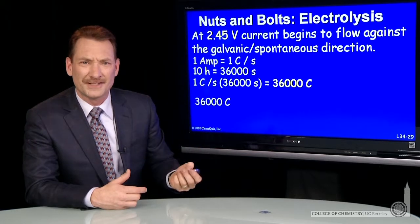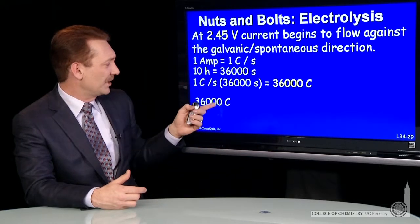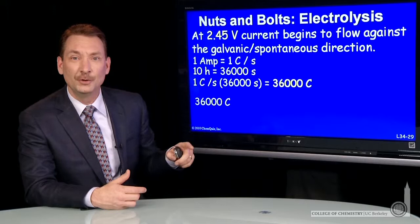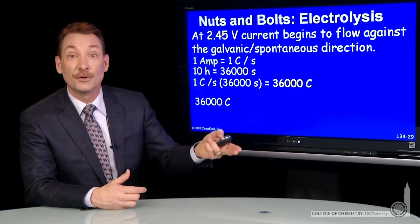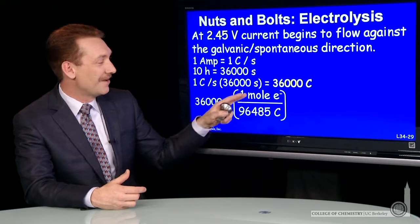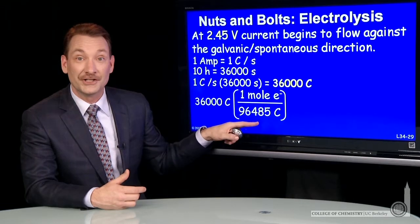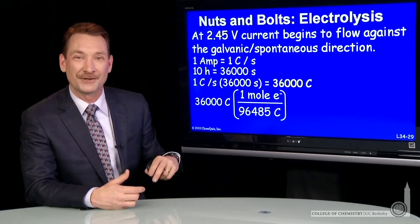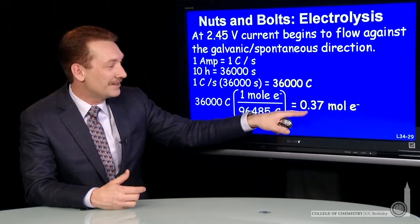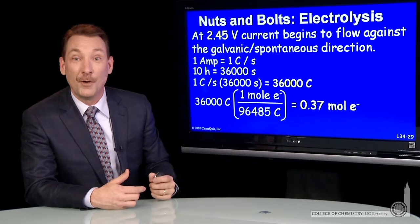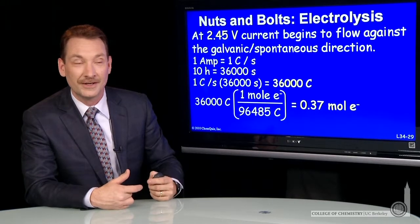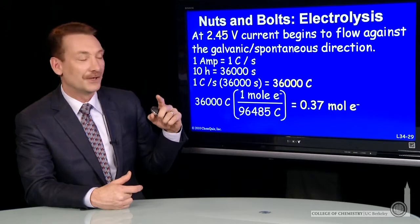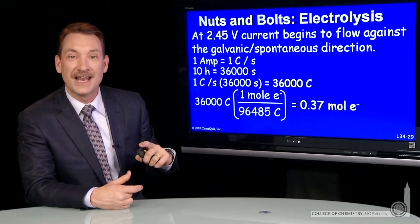Well, how many electrons is that? We can convert 36,000 coulombs of charge into moles of electrons using Faraday's constant. Faraday's constant is the charge in coulombs on a mole of electrons. So this corresponds to 0.37 moles of electrons transferred when one ampere of current flows for 10 hours.